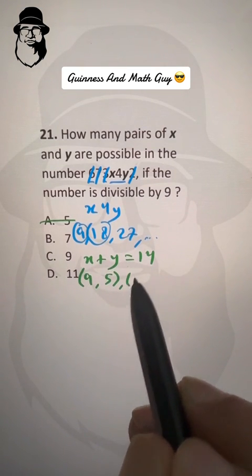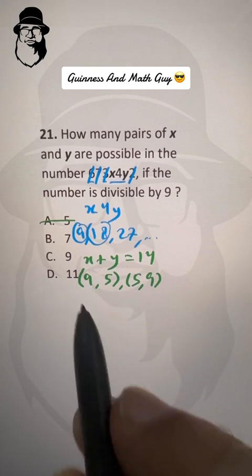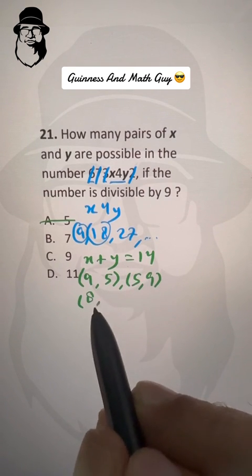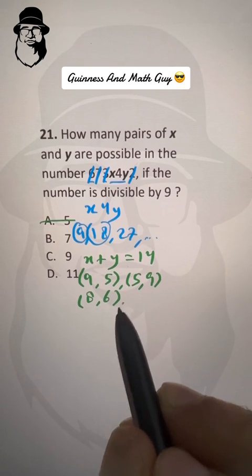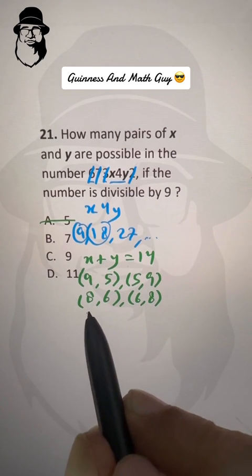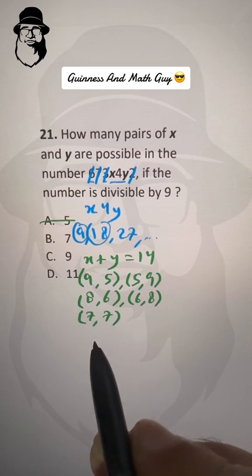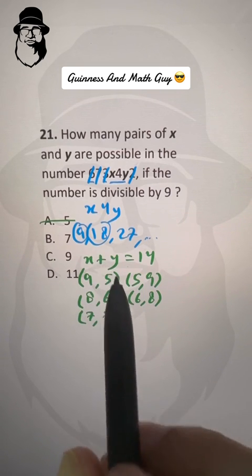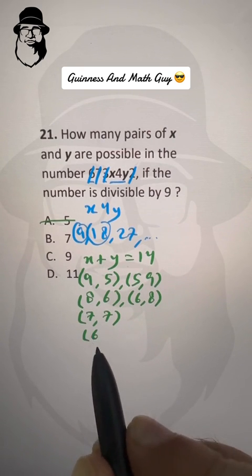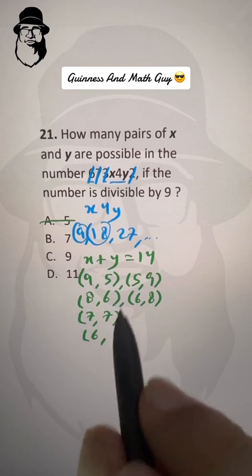9 plus what is 14? 9 plus 5 is 14. And we can have 5 and 9. 5 for X and 9 for Y. Then we can have 8 plus what is 14? That is 6. Or 6 and 8. Now we can have 7 and 7, right? 7 plus 7 is 14. Then we can have 6 and what is 14? That is 8. That we have already done. So we cannot go further.